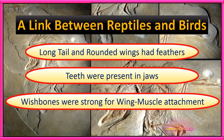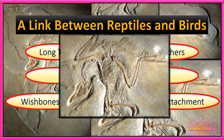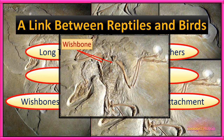Similarly, wishbones were strong for wing muscle attachment. The wishbone is a bone present in the chest of birds which helps in the movement of wings, and all the wing muscles are attached to this bone. Archaeopteryx also had a wishbone, and you can see clearly that the wishbones are present, meaning these wings were used for movement, whether during flight or during gliding.